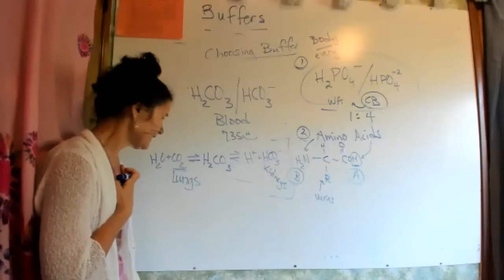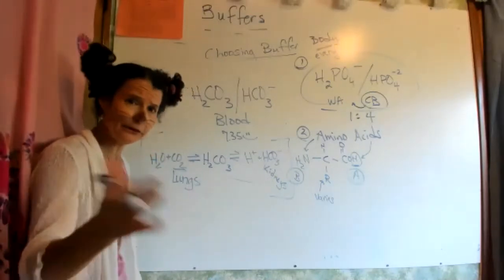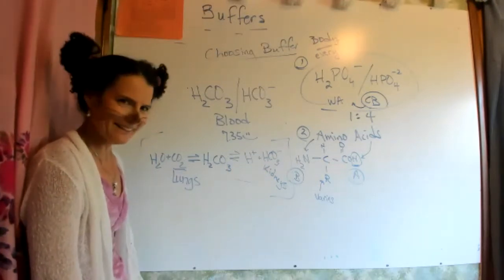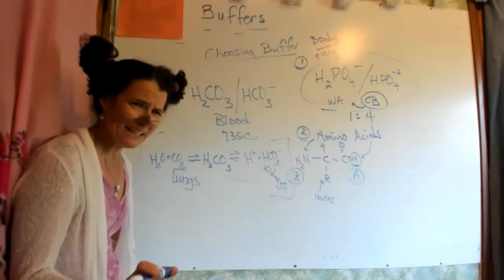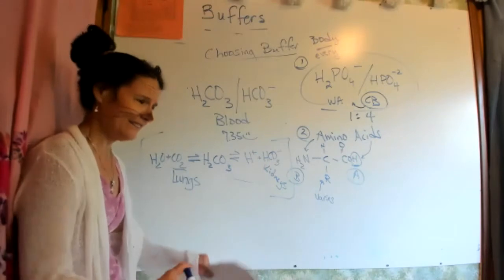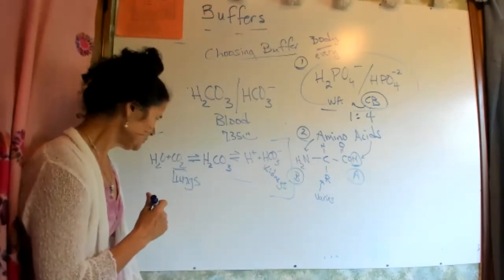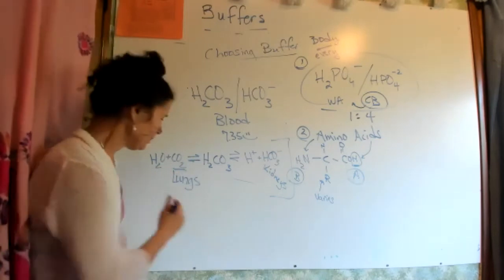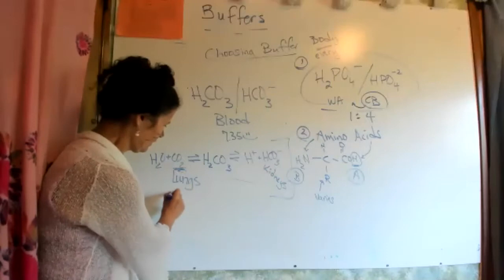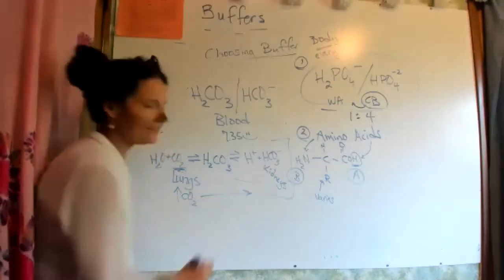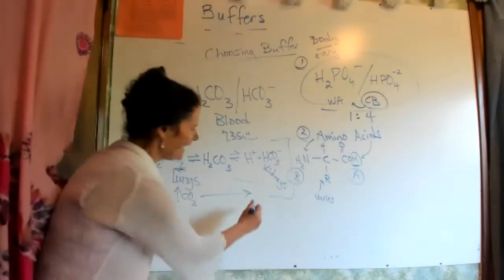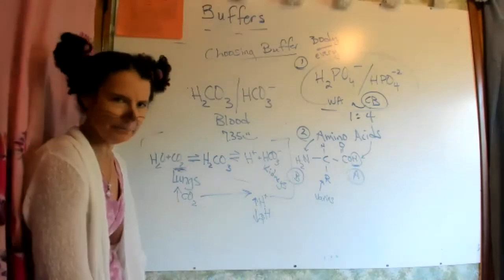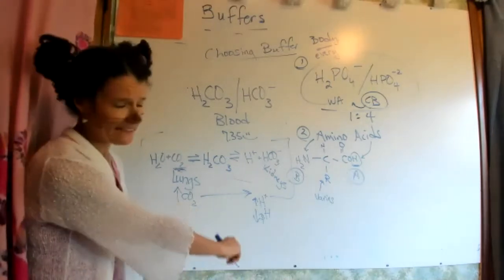Two things can happen. With respiration: if you have emphysema or compromised lungs from smoking, you don't get rid of CO₂. High CO₂ levels build up, and Le Chatelier's principle pushes the equilibrium to produce high levels of hydrogen, so your pH drops — you end up in acidosis.